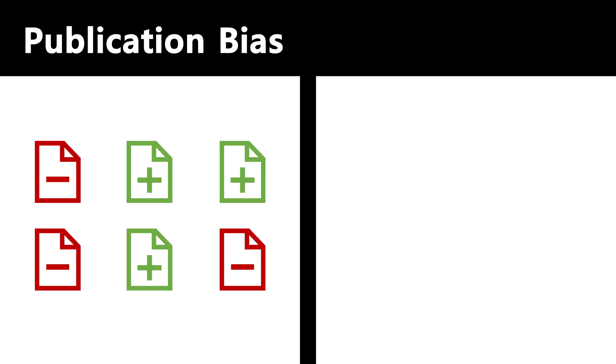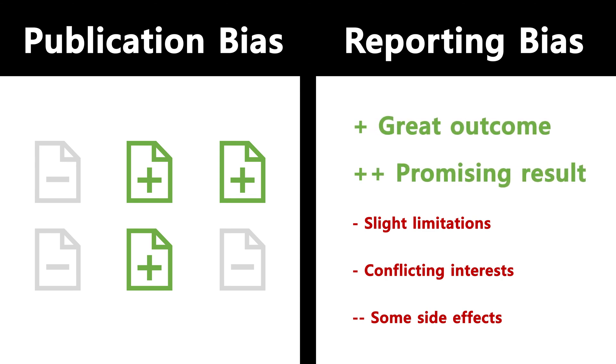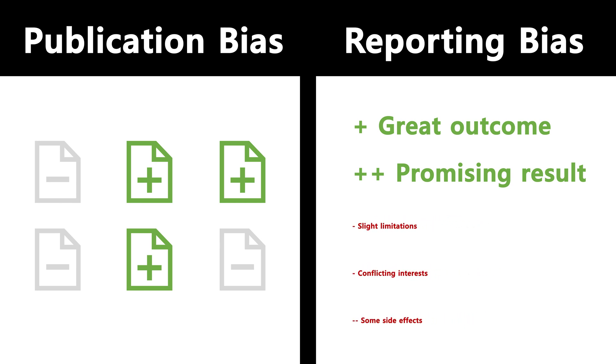Even after finishing your experiment, biases aren't fully out of your way. These are mostly statistical biases related to how data analysis is conducted, but also biases in what results actually get published. Well-known examples include drug or tobacco companies conducting multiple studies and not publishing the unfavorable ones — an example of publication bias. Another example is emphasizing positive results while downplaying or disregarding negative side effects, known as reporting bias.